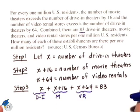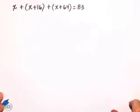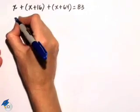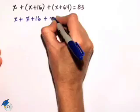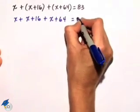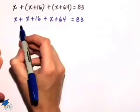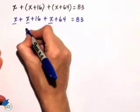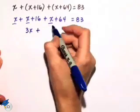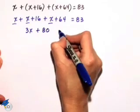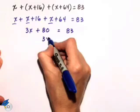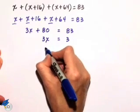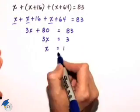Now we just need to solve this equation. We can first just remove the parentheses. X plus X plus 16 plus X plus 64 is equal to 83. If I combine all my X's, I have a total of 3X plus 16 plus 64 gives me 80, and that's equal to 83. If I subtract 80 from both sides, I get 3X equals 3. Dividing both sides by 3, X is equal to 1.